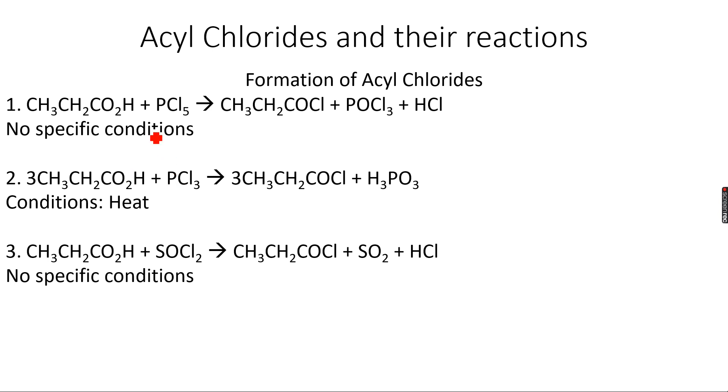We commonly use PCl5 or PCl3 or SOCl2. My favorite is PCl5 because it does not require any specific conditions. When I can leave the conditions column empty, because whenever I write PCl5, I do not need any conditions - it will react readily. When I react propanoic acid with PCl5, I get propanoyl chloride.